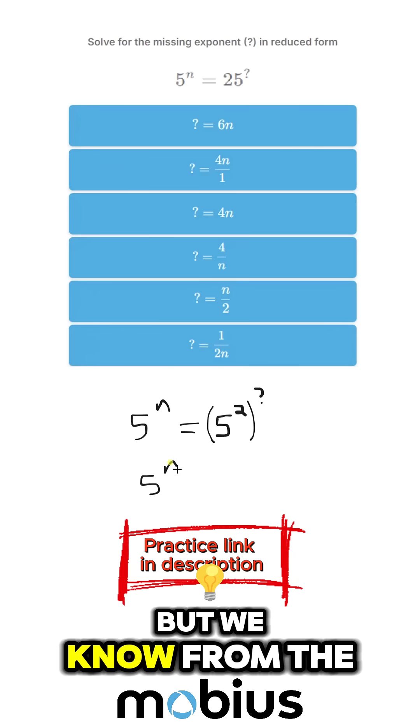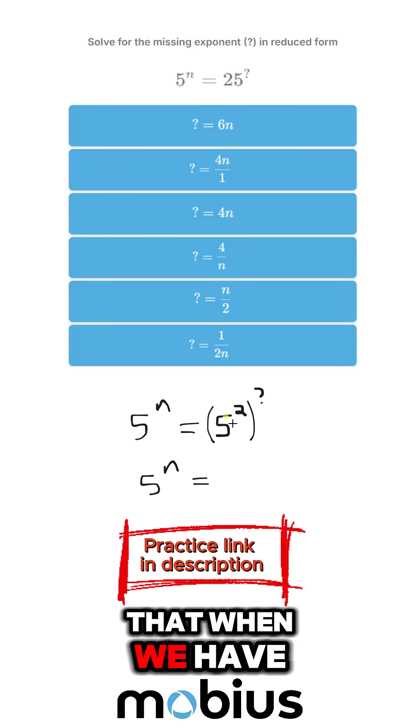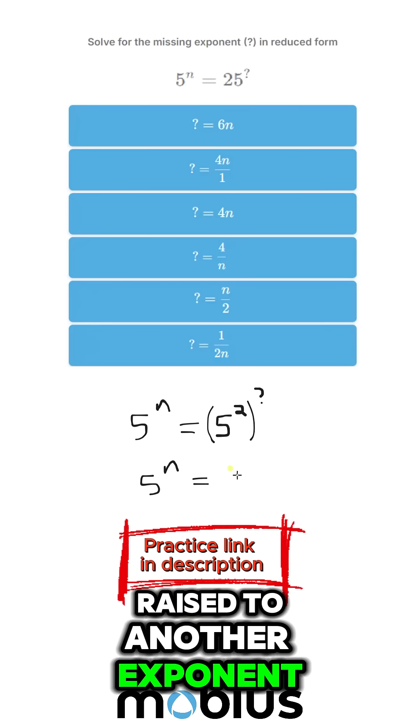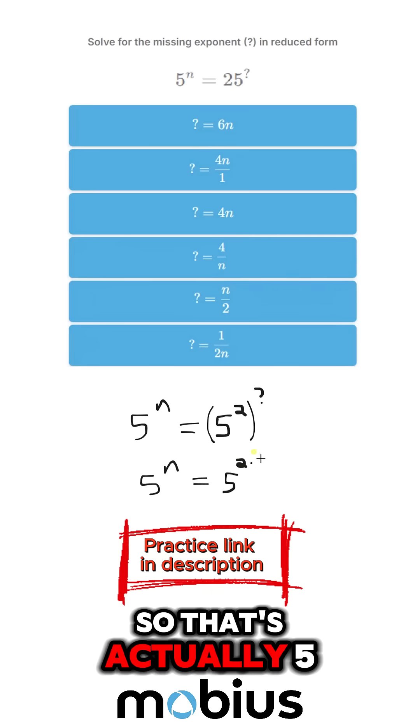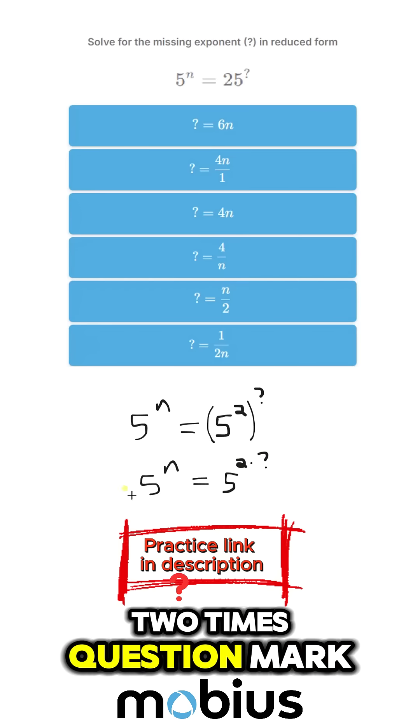But we know from the power law, when we have an exponent raised to another exponent, what we would do is multiply the terms. So that's actually 5 to the power of 2 times question mark.